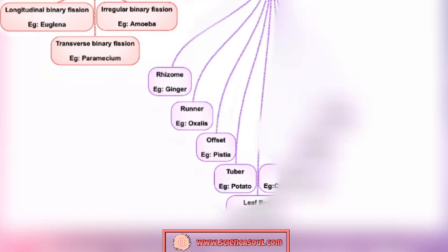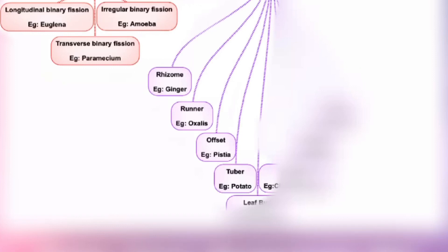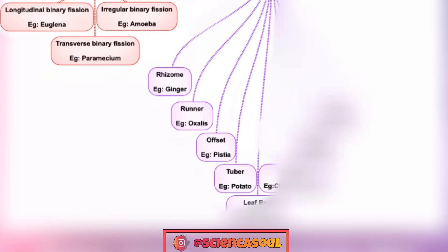Next is tuber — for example, potato. Tubers are fleshy underground storage structures composed of an enlarged part of the stem. A tuber functions in asexual propagation as a result of tiny scale leaves equipped with buds that grow on its surface.